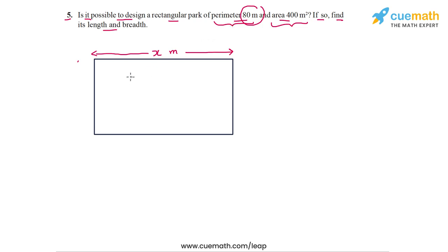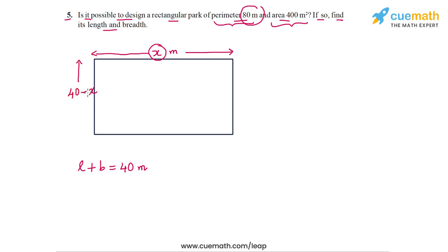The perimeter is 80 meters, and perimeter is twice the length plus twice the breadth. So if you just add the length and breadth once, it should equal 40 meters. Length plus breadth equals 40 meters. If the length is x meters, then the breadth must be 40 minus x meters. So we've specified the length and breadth in terms of the variable x.